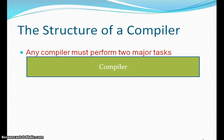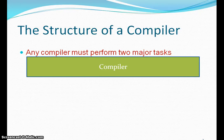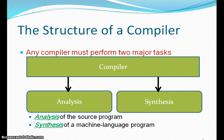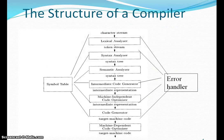There are a number of phases required to convert the higher level language into machine level language. Mainly, the compiler must perform two major tasks: first, that is known as analysis, and second is synthesis. Analysis means it analyzes the source program, and synthesis produces the machine level program.